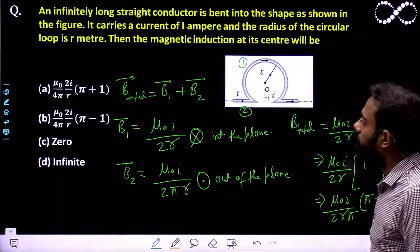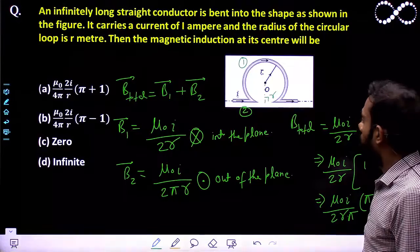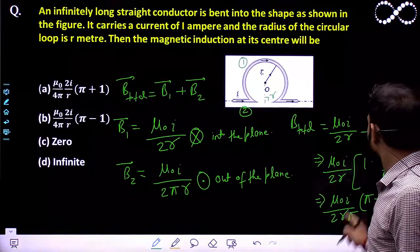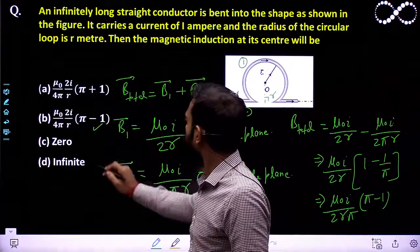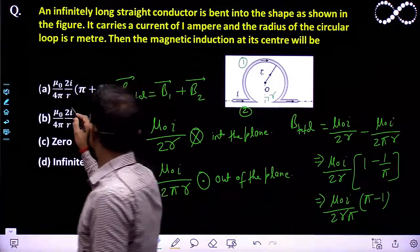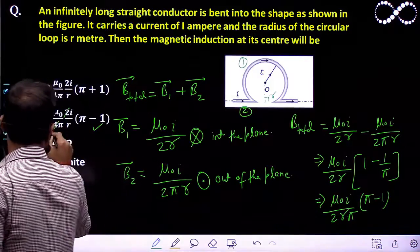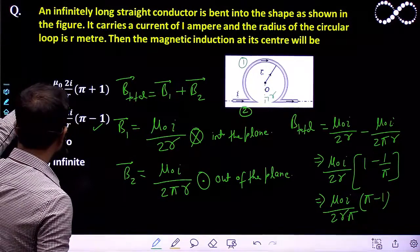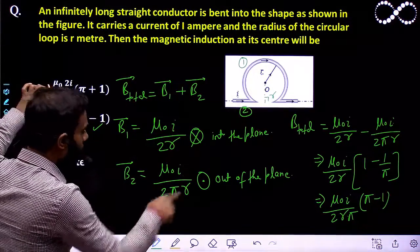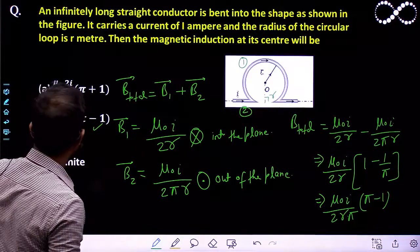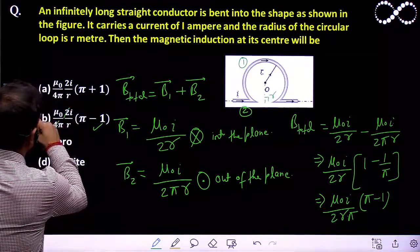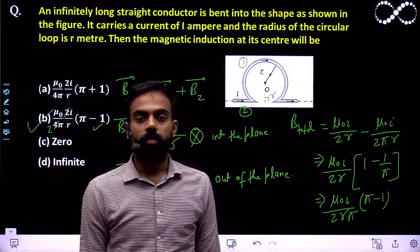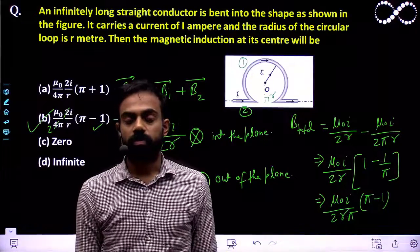Let us check which option matches. We have (π − 1) in the numerator, μ₀I in the numerator, and 2πR in the denominator — so option B is matching. I hope you understood this question, students.